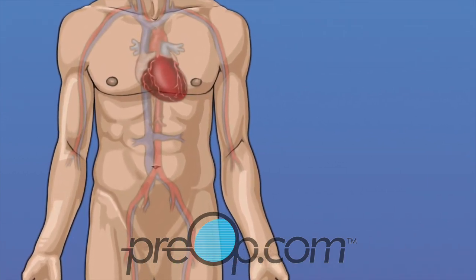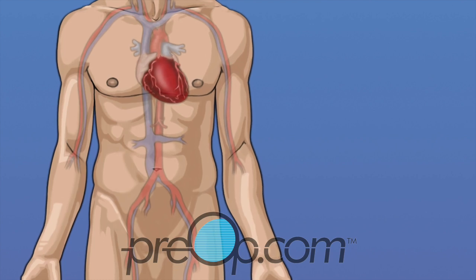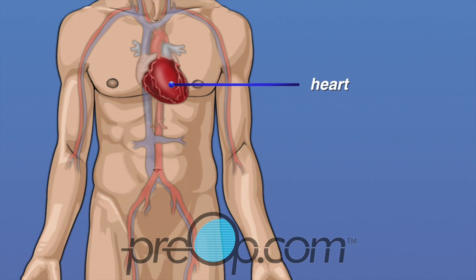Let's begin by reviewing information about your body. Your heart is in the middle of your chest, under your ribs. It is the muscle that pumps blood to the rest of your body. Blood flows through tubes called blood vessels.